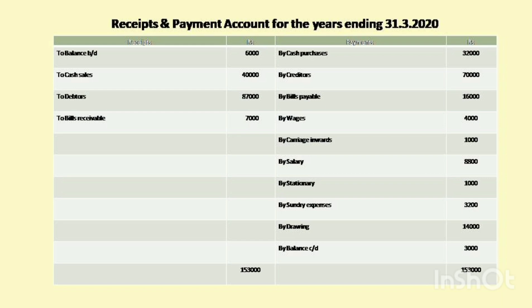Receipt and payment account for the year ending 31-03-2020. Opening balance: Rs. 6,000; Cash sales Rs. 40,000; Debtors Rs. 87,000; Bills receivable Rs. 7,000. Payment side: Cash purchases Rs. 32,000; Creditors Rs. 70,000; Bills payable Rs. 16,000; Wages Rs. 4,000; Carriage inwards Rs. 1,000; Salary Rs. 8,800; Stationery Rs. 1,000; Sundry expenses Rs. 3,200; Drawings Rs. 14,000; Balance carried down Rs. 2,000. The total of both sides is Rs. 1,53,000.